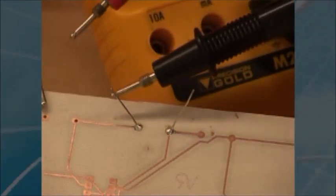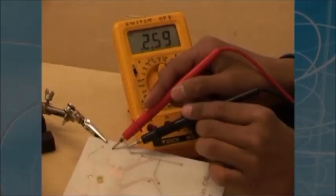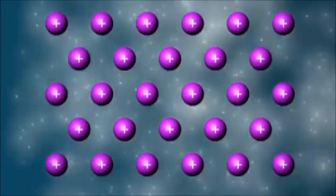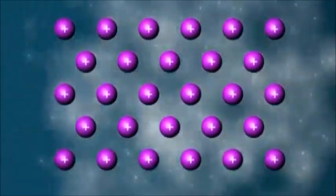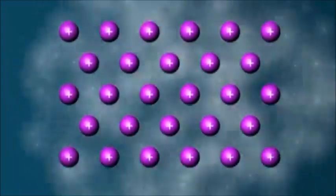For example, solid metals are able to conduct electricity. This is because the loosely held valence electrons of metal atoms are delocalized. They are not bound to one atom.